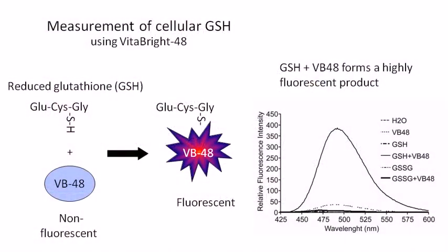Vitabrite 48 reacts with reduced glutathione but not the oxidized form, forming a strongly fluorescent product. The reaction is stoichiometric, and we can thus directly measure the level of reduced glutathione in each cell by quantifying the fluorescence of the cell.